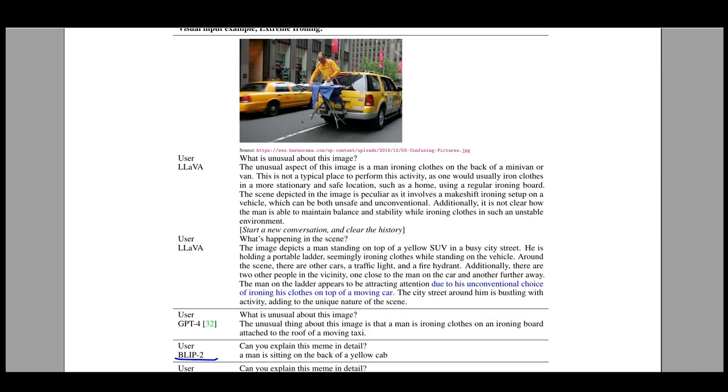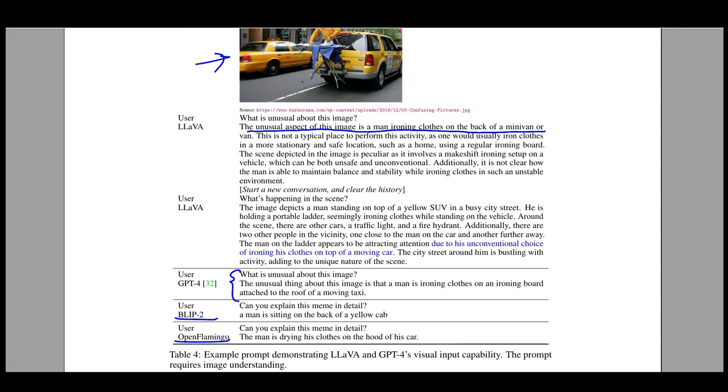For example, if you show this image and ask LAVA what is unusual about this image, LAVA clearly says the unusual aspect of this image is a man ironing clothes on the back of a minivan or van. A similar response also comes from GPT-4. The unusual thing about this image is that a man is ironing clothes on an ironing board attached to the roof of a moving taxi. But in case of BLIP or OpenFlamingo, the response is as simple as a man sitting on the back of a yellow cab, or the man just drying his clothes on the hood of a car.